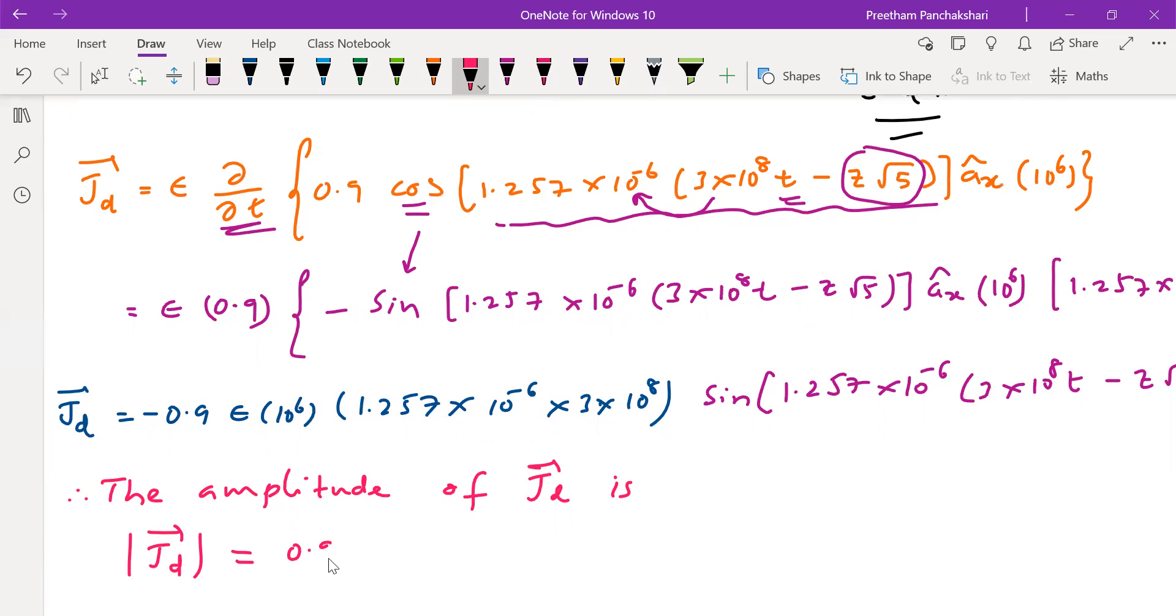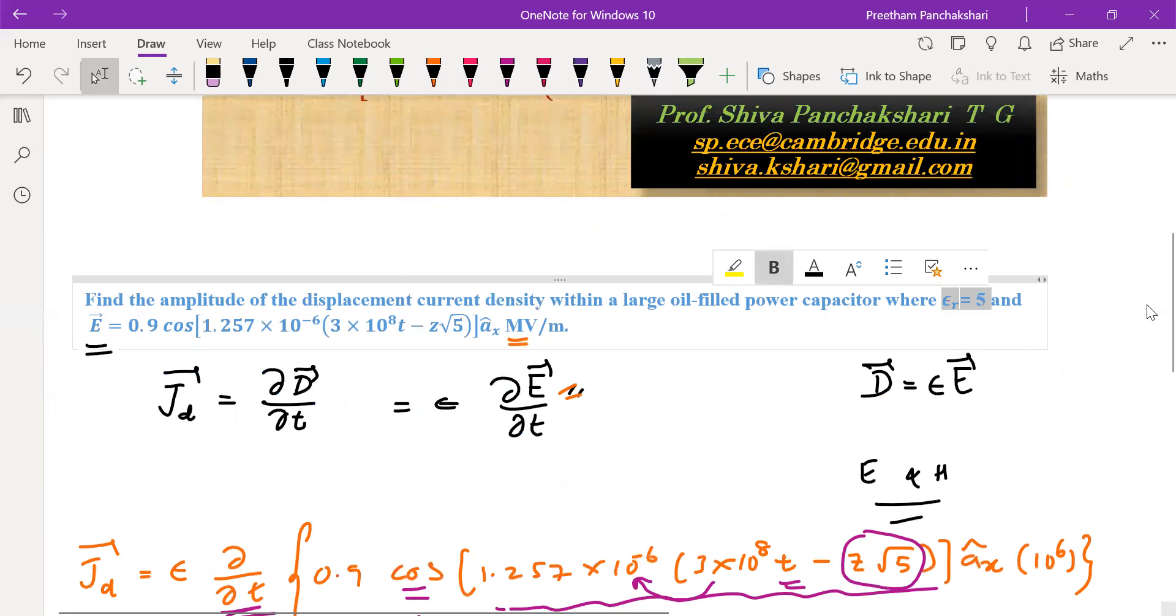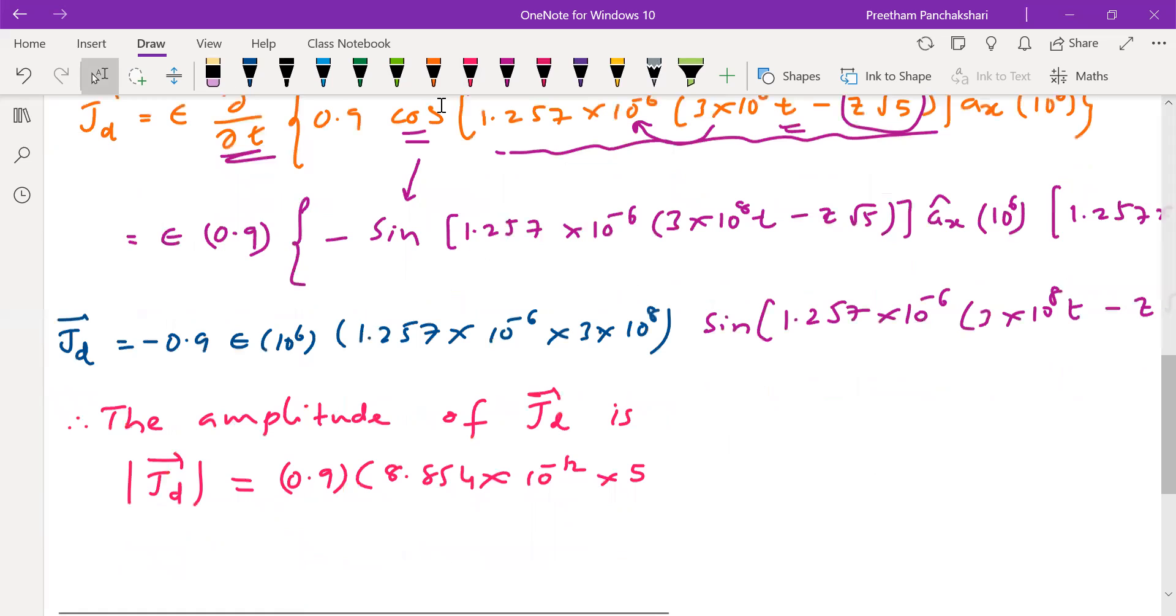So you can take it: here is 0.9, and also ε. Epsilon is ε₀ into εᵣ. ε₀ is 8.854×10⁻¹² and εᵣ is given in the problem as 5. We'll check once, the numerical itself, εᵣ is mentioned here as 5.